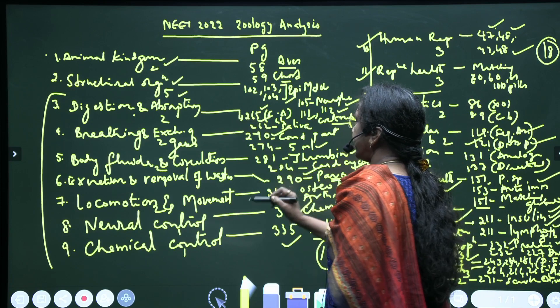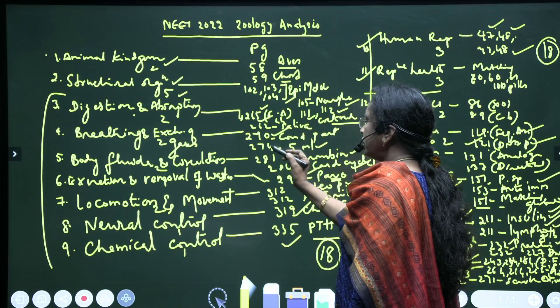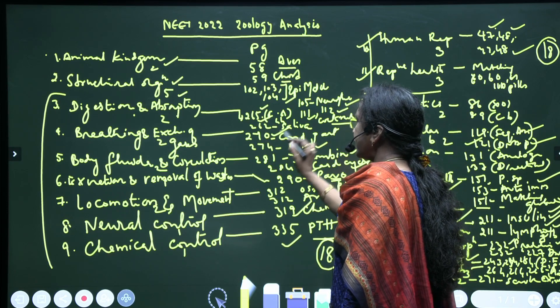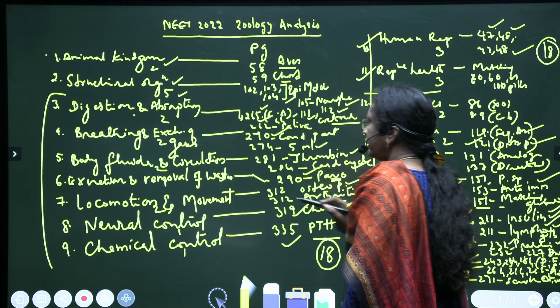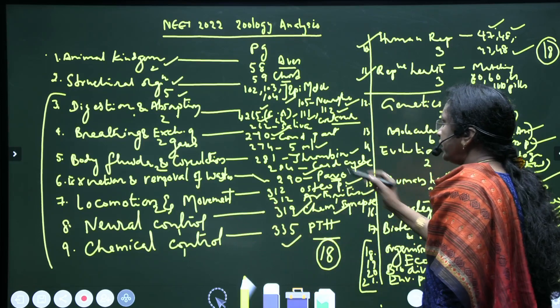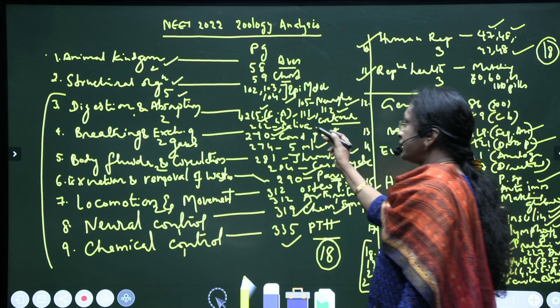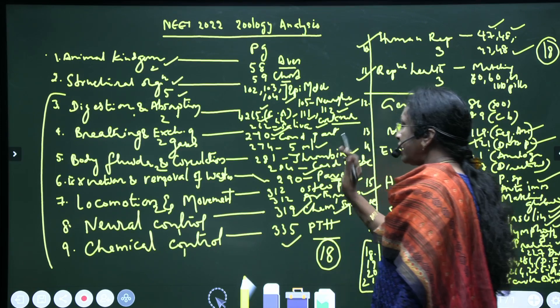We got two questions like previous years - page 265: fatty acids and glycerol are not directly absorbed into blood. Page 262: disaccharides are not digested by saliva. Saliva digests starch and complex carbohydrates.